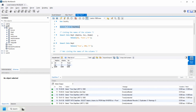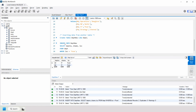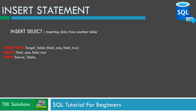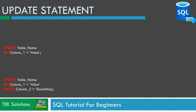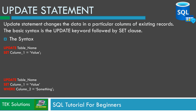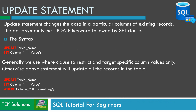That's how you insert data from one table into a new table using INSERT INTO with a SELECT clause. Next, what if you want to update existing column values in a table? The UPDATE statement changes data in a particular column of existing records. The basic syntax is: UPDATE table_name SET column = value. Generally we use a WHERE clause to restrict and target specific records only, otherwise the statement will update all records in the table.